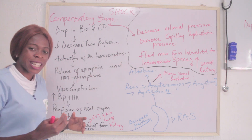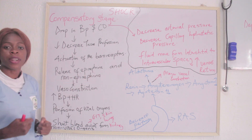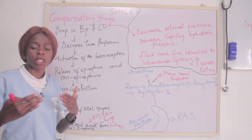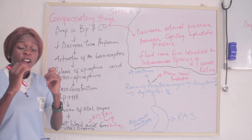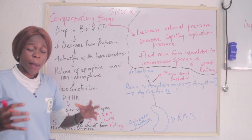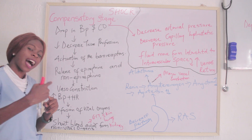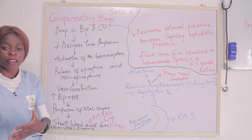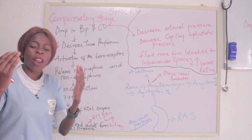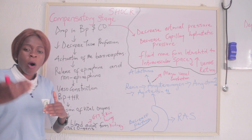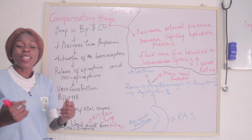The baroreceptors have been activated, and that leads to the release of catecholamines — epinephrine and norepinephrine. These cause vasoconstriction, which results in increased blood pressure and increased heart rate. The oxygen that is available is taken to vital organs such as the brain and the heart, because if there is no heart or brain, the body system is going to collapse.